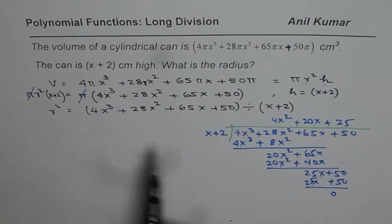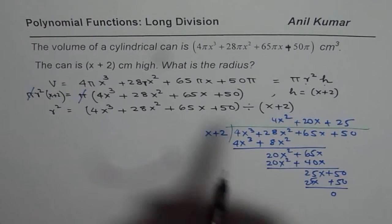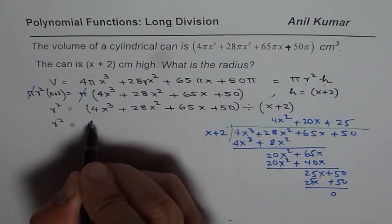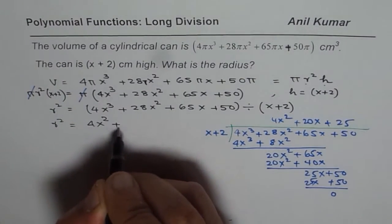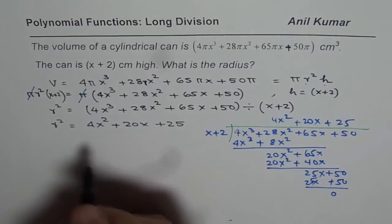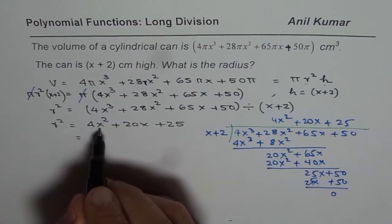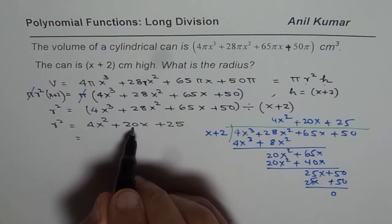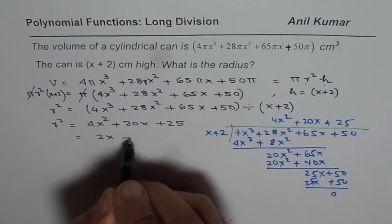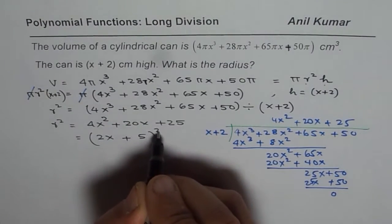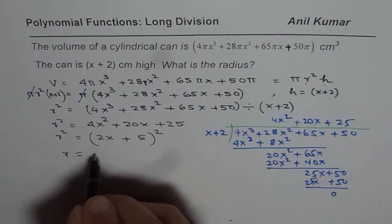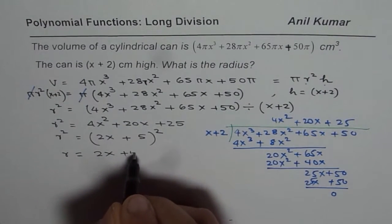So we can write r², when you divide this by that, r² equals the quotient, which is 4x² + 20x + 25. Now that is a perfect square: (2x)², 5², 2 times 2x times 5. So I could write this as (2x + 5)². So we have r² equals (2x + 5)², therefore r is 2x + 5.